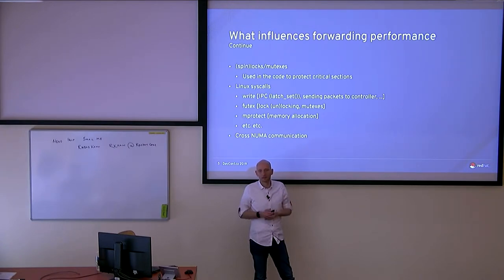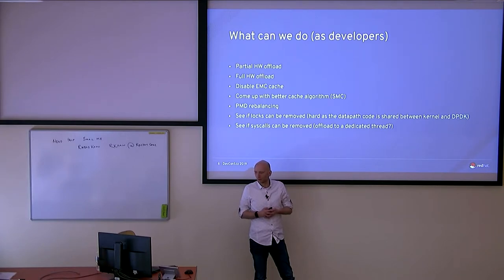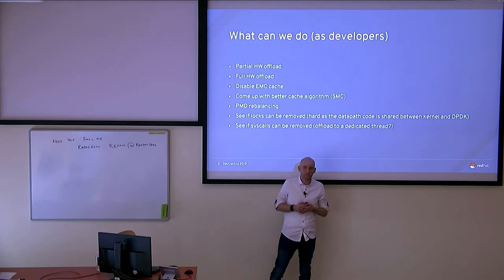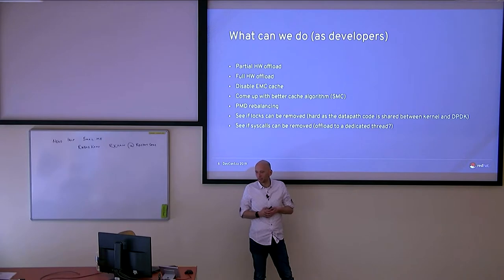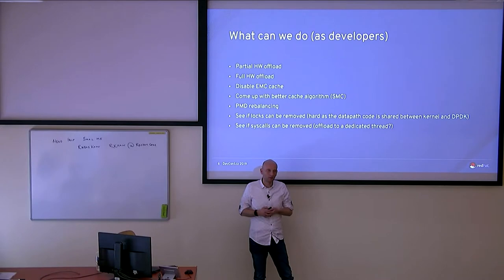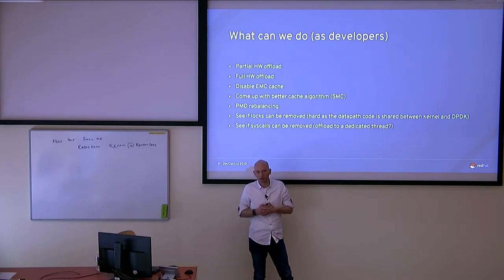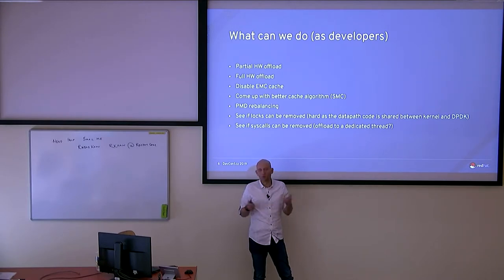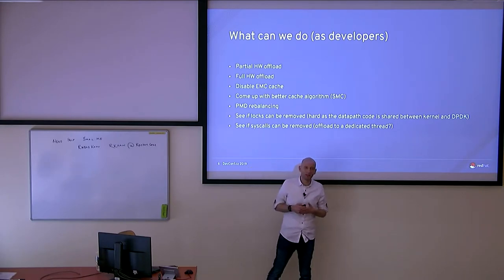Cross-NUMA communications are also a factor — if you have two virtual machines in different NUMA nodes, memory transfer has to cross the interconnect between the two CPUs. As a developer, one thing recently added is partial hardware offload: it takes packets coming in, matches the flow, then puts a marker in hardware saying 'if you see this flow again, tell me the flow ID,' so you don't have to redo all the lookups and hashing — you directly know which flow to pick.